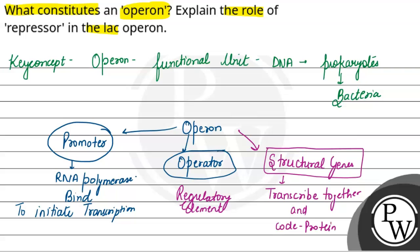Last, there is a regulatory gene. This is outside the operon and codes for repressor protein.